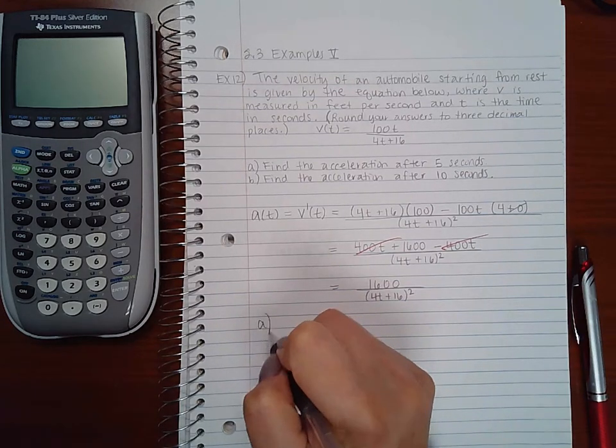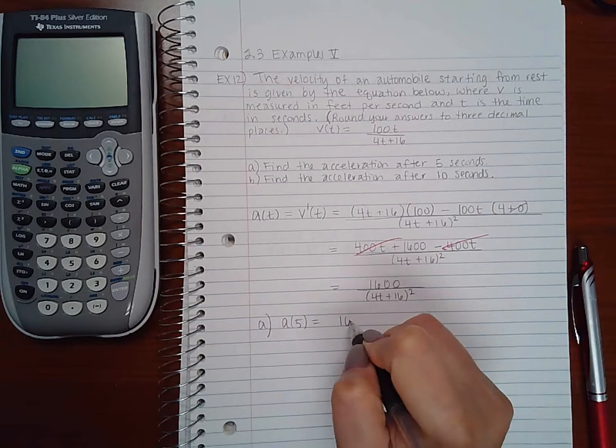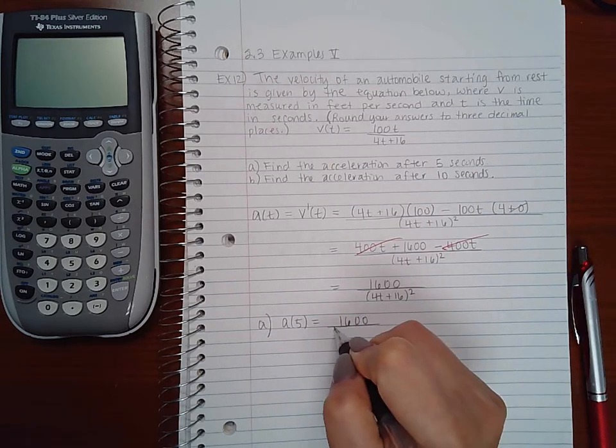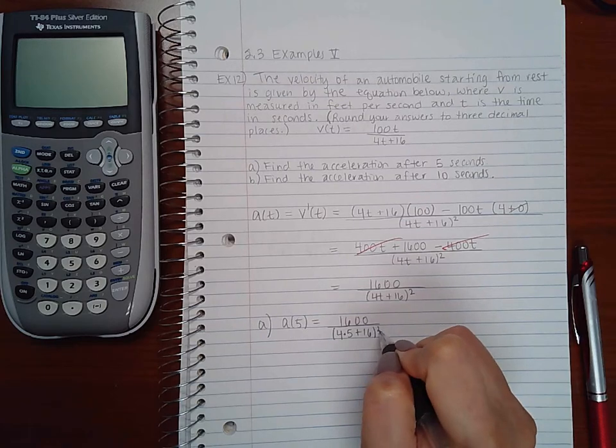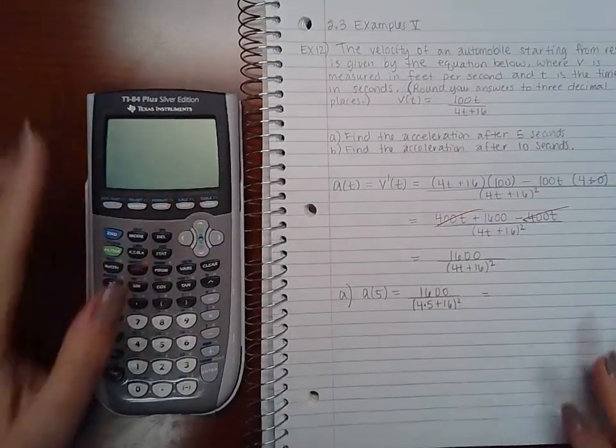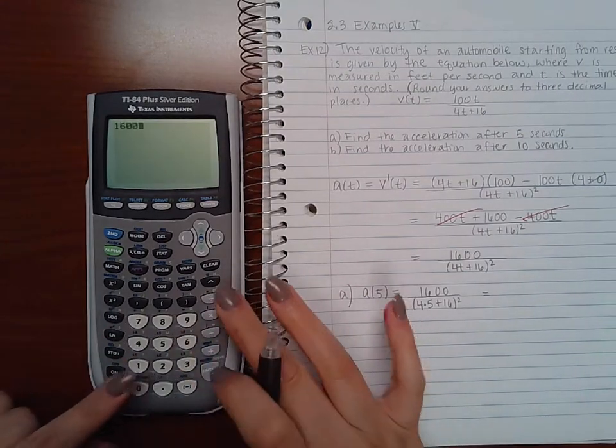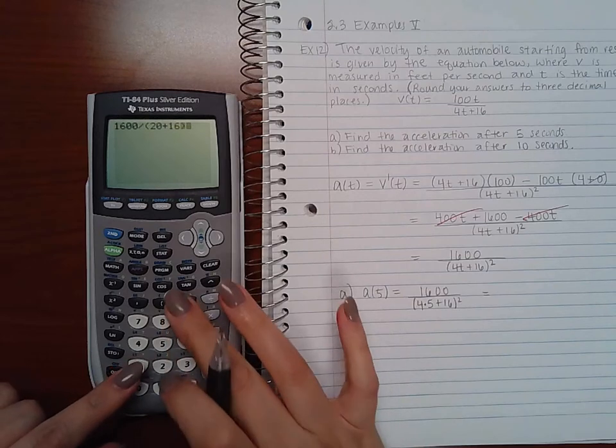Now if I want to do part a, I want to find a of 5, which means I'm going to plug in 5 where I see a t. And if I stick that in my calculator, 1600 divided by 20 plus 16 squared.